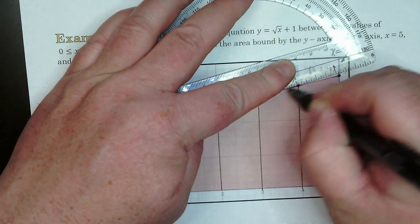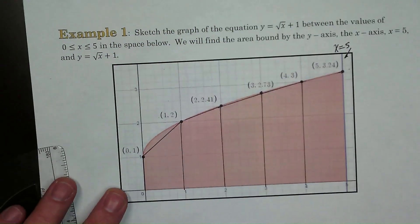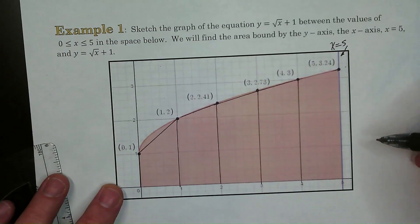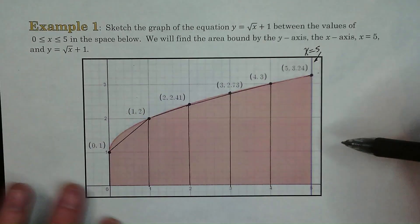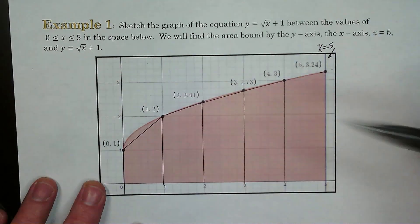So what we're going to do, we're going to find the area of each of these trapezoids, add them up, that's going to give us an approximation of the area underneath the curve.